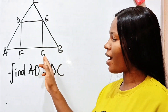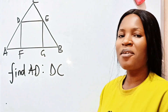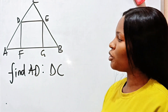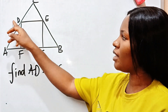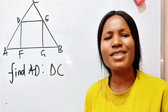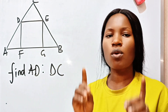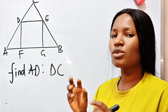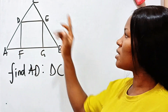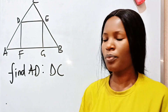No number is given, but we are asked to find something. Welcome back to my channel. We are asked to find the ratio of AD to DC. How is that possible? No number is given, but one thing is clear: we are told that triangle ABC is an equilateral triangle.